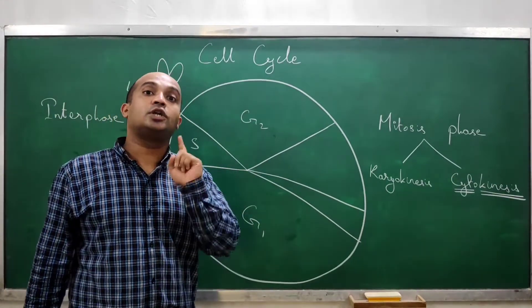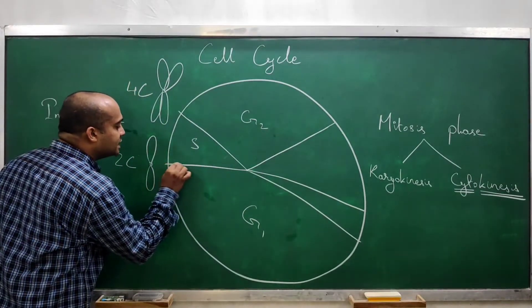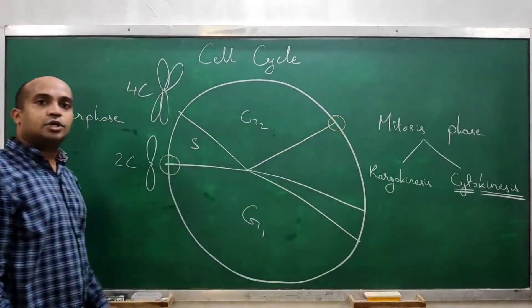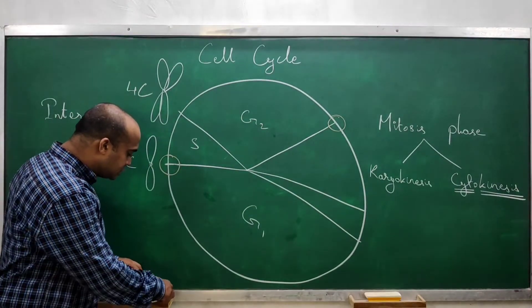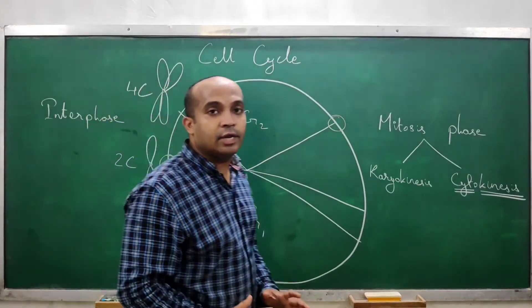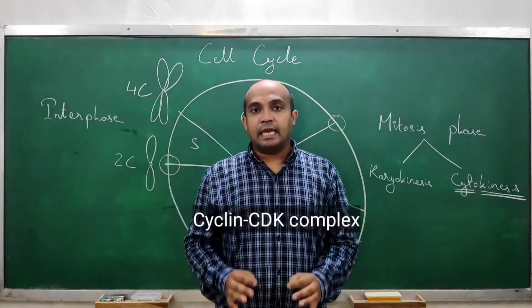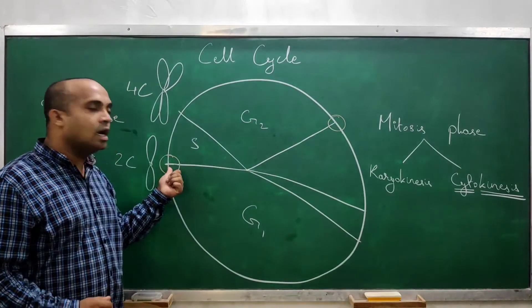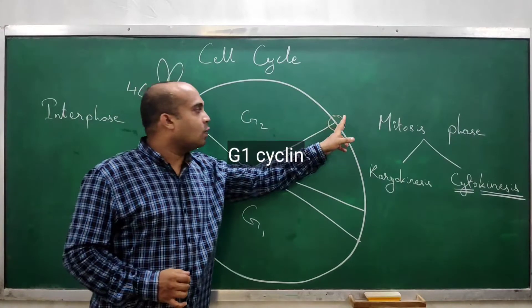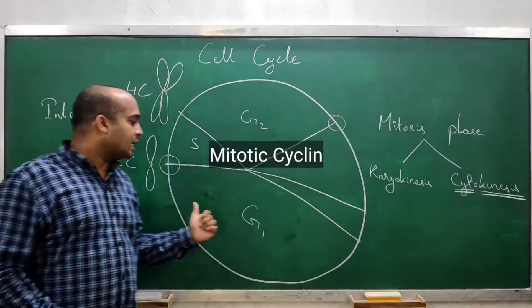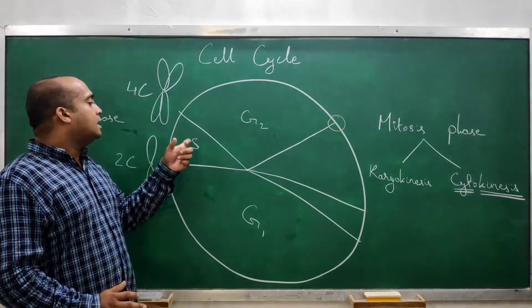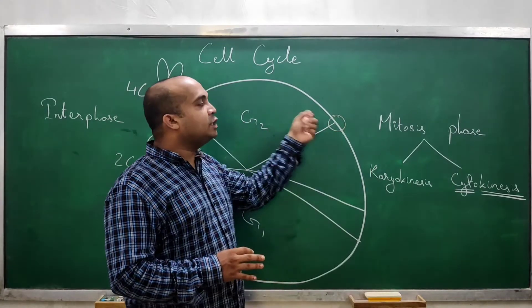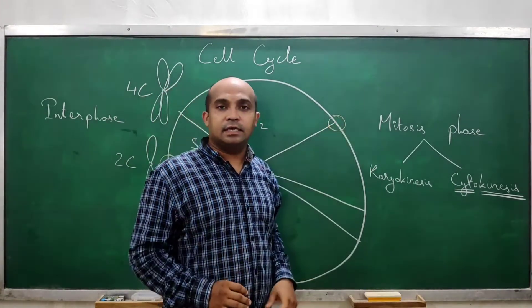There are two checkpoints in the cell cycle. One checkpoint is present at the G1-to-S transition and another at the G2-to-M transition. These two checkpoints are regulated by cyclin-CDK complexes. At the G1-to-S checkpoint, the cyclin required is called G1 cyclin, and the cyclin required at the G2-to-M checkpoint is called mitotic cyclin. G1 cyclin helps in the transition of the cell from G1 phase to S phase, and mitotic cyclin helps in the transition from G2 phase to M phase.